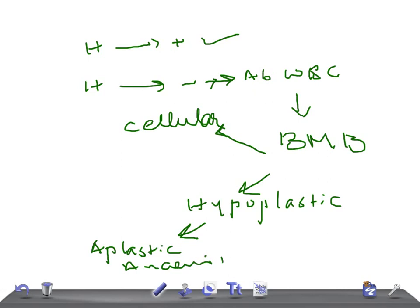If the bone marrow is cellular, then it can be leukemias, marrow infiltration, megaloblastic anemia, storage disorders, or myelodysplastic syndromes. If the bone marrow is near normal, then consider PNH, drugs, hyposplenism, or infection as the differential diagnosis.